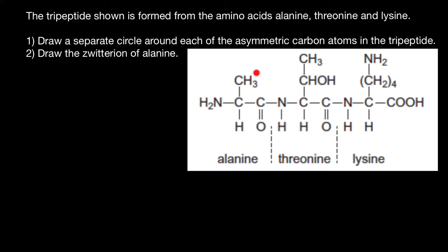It is connected on one side to a CH3 group, an amino group on another side, hydrogen on another side, and a carboxylic group on the other side. So all four groups are different, and we can say that this carbon is asymmetric or chiral. Now let's circle it in red.